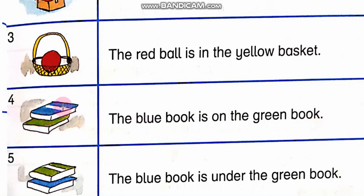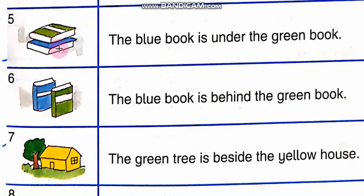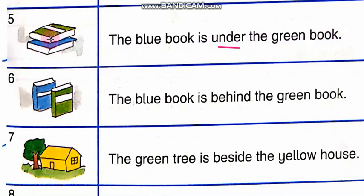In the fifth picture, there are two books — ek hai green aur ek hai blue. Jou blue book hai, woh green book ke niche hai. Niche ke liye word use karthi hai: Under. The blue book is under the green book. Jou blue book hai woh green book ke under hai, yianni niche hai.